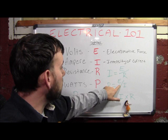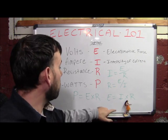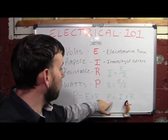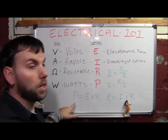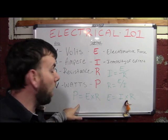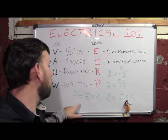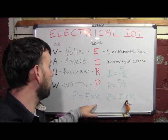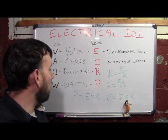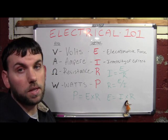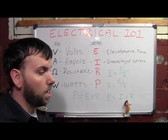We can figure out our voltage if we know amperage times resistance. We can also find our power — what you get charged for — which is voltage times amperage. Ohm's Law kind of covers everything, and there are a lot more formulas that stem from it.